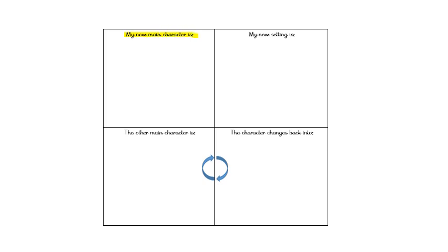The next thing is your other main character. In the story it is the frog, but the character changes back into a prince, so you need to think of your other main character — the animal — and what that character is going to change back into. Draw a picture and write the names. I've done arrows because your main character needs to change back into a person.